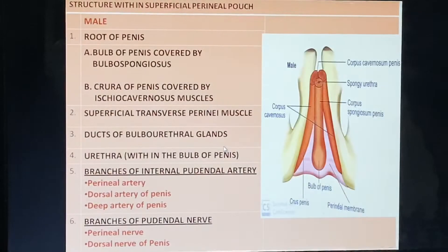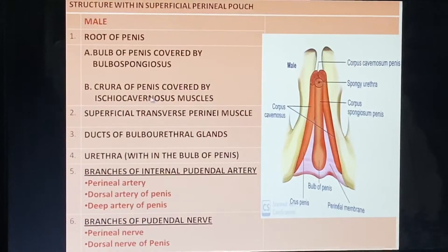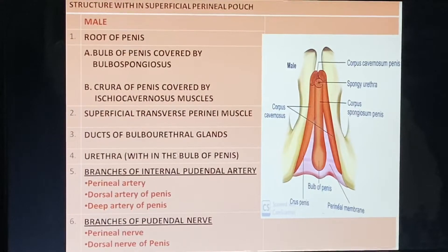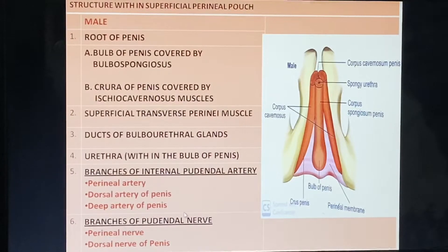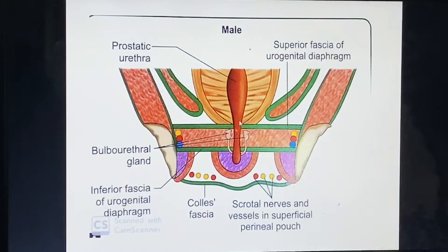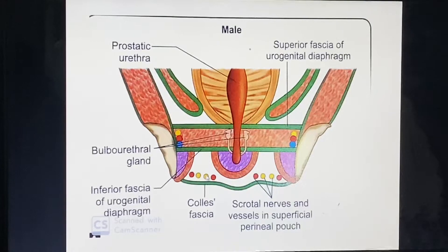Structures within the superficial perineal pouch in males include: root of the penis with the bulb and crura of the penis, superficial transverse perinei muscle, ducts of the bulbourethral gland, urethra, and branches of the internal pudendal artery and pudendal nerve. A sagittal section diagram shows these structures within the superficial perineal pouch.